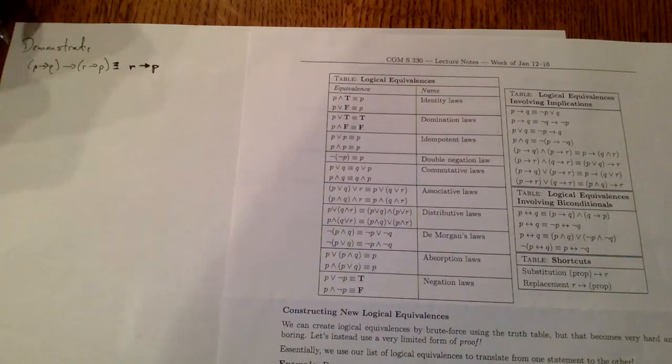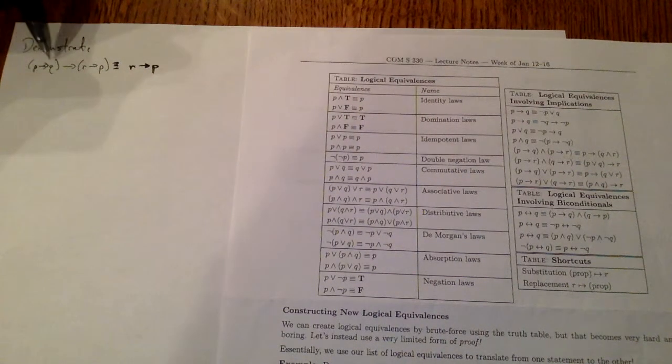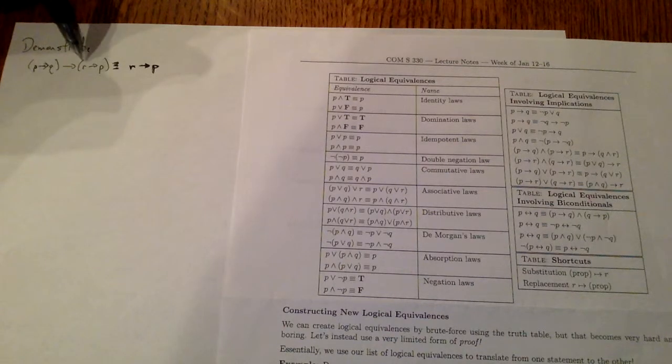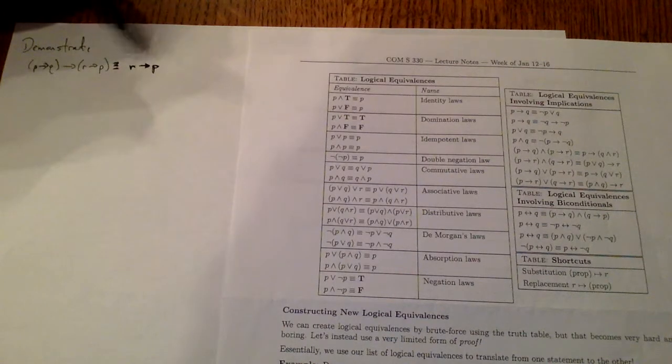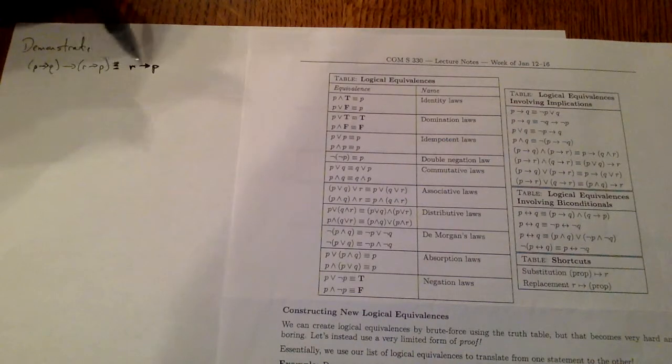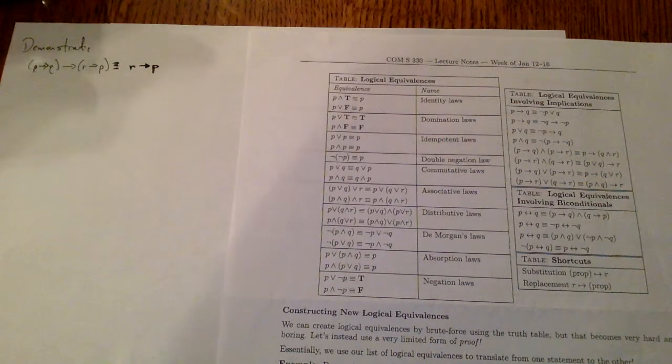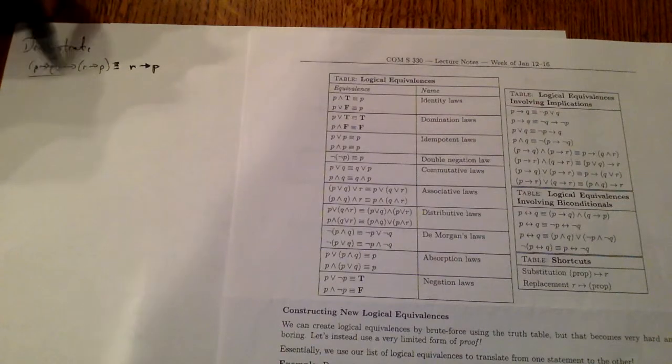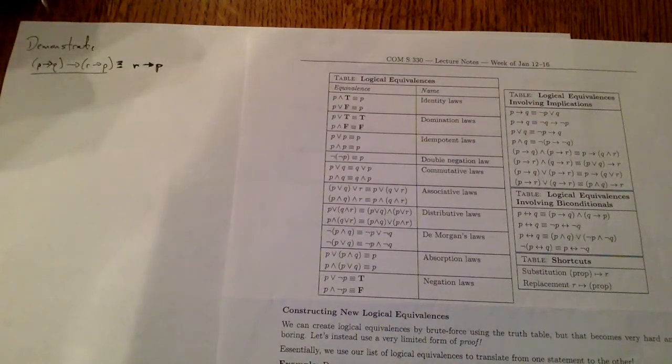Let's now consider this example. Demonstrate the logical equivalence between (P implies Q) implies (R implies P), and R implies P. So you see that R implies P appears in both sides, so we'll keep that in mind. Let's follow our steps, and let's start with the left-hand side and show that it's equivalent to other things.